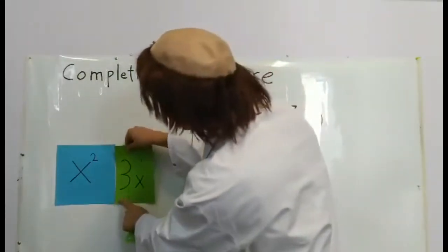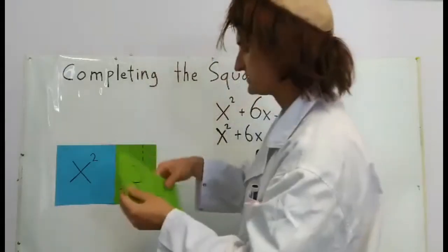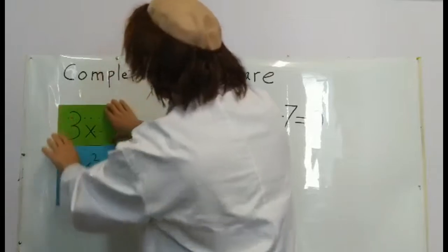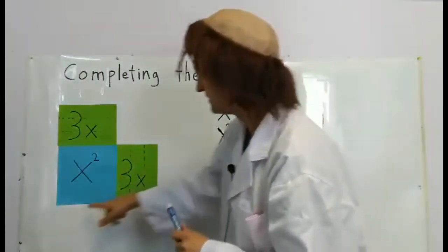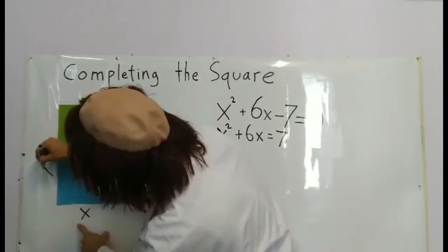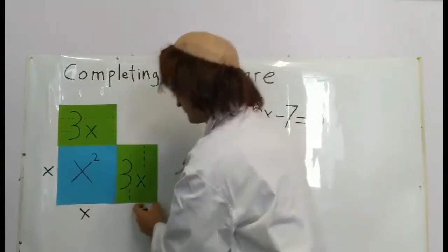This piece goes here, 3x. This piece goes here. This piece goes here. Now let's label. This is x. This is 1, 2, 3.